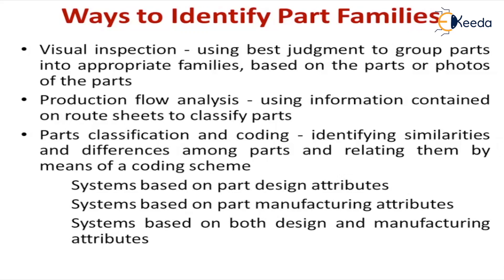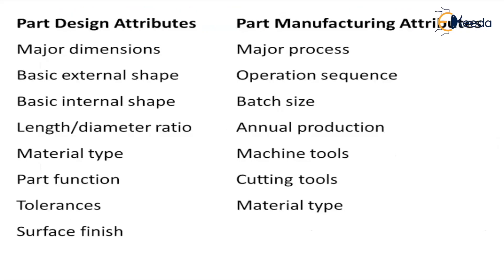The part classification coding system is adopted for all kinds of components. A coding is given for each component, and when you see that code you can identify the shape, size, and material of the component. This classification is done on two bases: part design attributes and part manufacturing attributes, and a part can fall into both categories.